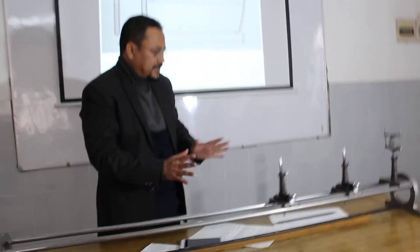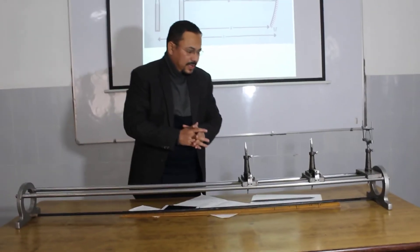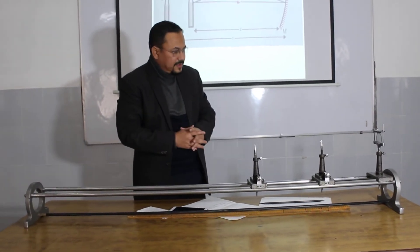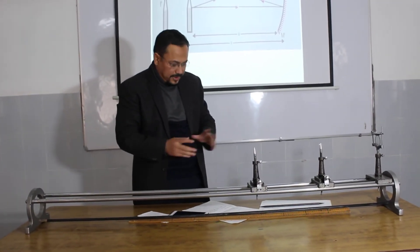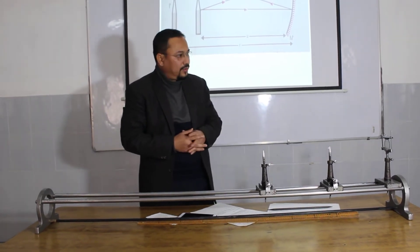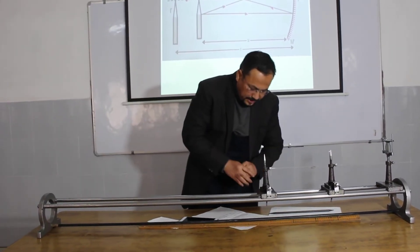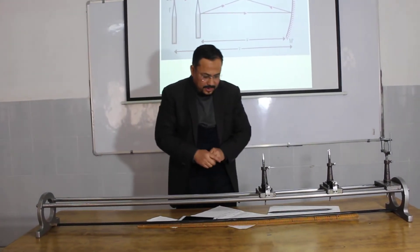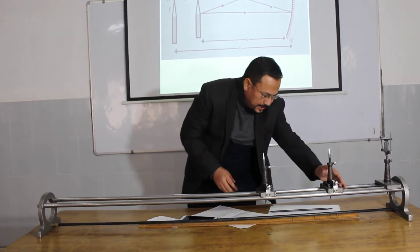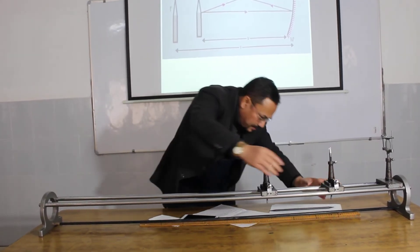I am placing a flag on the object pin to mark the real position. This is the real no-parallax condition for the first observation. The first observation: object position is 26.0 cm and image position is 58.2 cm.